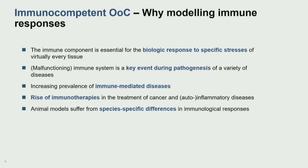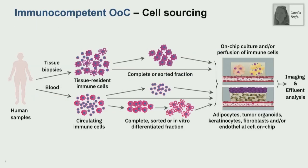One of the key steps in getting immune competence in our models is the cell sourcing. We use two different approaches, and we always start with a human. We get tissue biopsies and isolate tissue-resident immune cells, use them in complete or sorted fractions and add them back into our systems. Or we use blood and isolate circulating immune cells, either sorted or in an undifferentiated or differentiated way. Sometimes we even combine these two — getting biopsies and blood from the same patient — which gives us a toolbox for integrating immune cells.